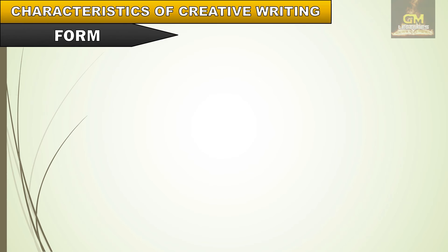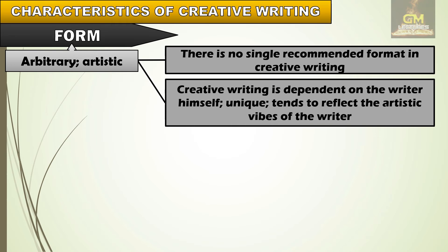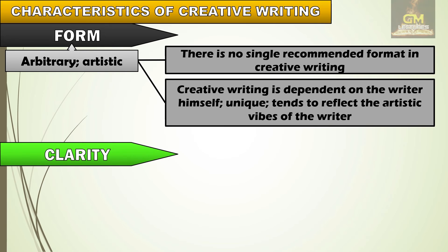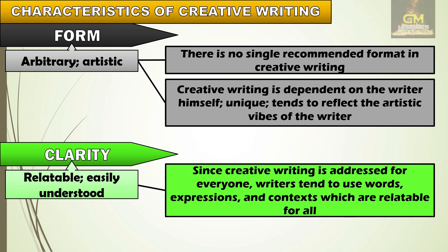Again, in terms of form, creative writing follows an arbitrary or artistic manner of writing. There is no single recommended format in creative writing — it is dependent on the writer himself, it is unique and tends to reflect the artistic vibes of the writer. No two literary works are the same because each particular literary piece depends on the style or form used by the writer. In terms of clarity, creative writing is relatable and easily understood by a lot of people, as writers tend to use words, expressions, and contexts which are relatable for everyone.